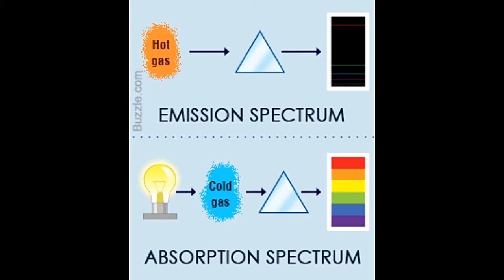The term spectrum generally refers to electromagnetic spectrum, which includes all the frequencies of electromagnetic radiation. Earlier, the term was restricted to light only, but later it was modified to include other waves too, such as sound waves. Wavelengths range from a picometer to hundreds of megameters. It includes the visible spectrum, which deals with all the wavelengths that are visible to the naked eye.